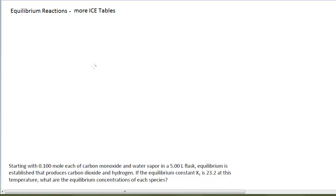The problem can get trickier. Let's look at this problem we have down here at the bottom. This is again equilibrium reactions using ICE tables to help us solve the problems. So here we go. Starting with 0.1 mol each of carbon monoxide and water vapor in a 5 liter flask, equilibrium is established that produces carbon dioxide and hydrogen. If the equilibrium constant, Kc, is 23.2 at this temperature, what are the equilibrium concentrations of each species?